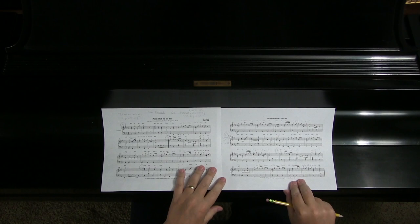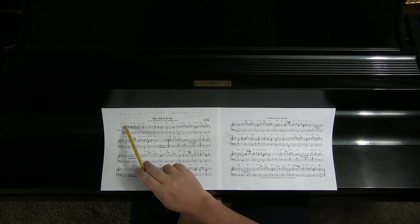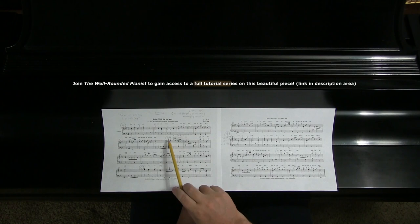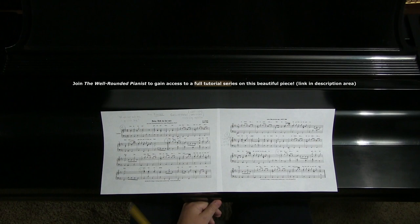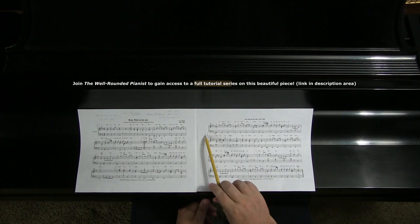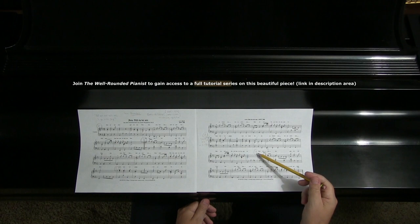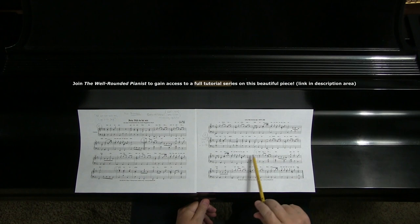So we have the aria here. I want you to mark a capital letter A right here with a circle around it, and a capital letter B right here — that's where the repeat sign is. Then put a capital letter C right here at the beginning of measure 19 with a circle, and then a capital letter A at the beginning of measure 28, and a capital letter B at the beginning of measure 37.